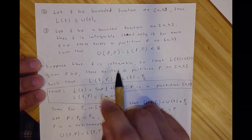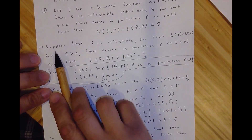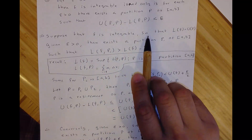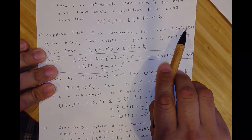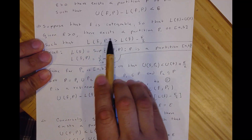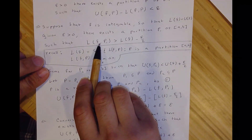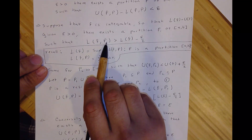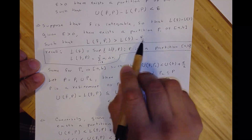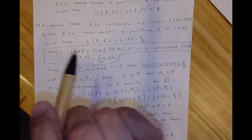Because this is an if and only if, we need to test both sides. Suppose that F is integrable — this means the lower integral of F equals the upper integral of F. Given epsilon greater than zero, there exists a partition P1 in the interval such that the lower sum of P1 is greater than the lower integral minus epsilon divided by two.